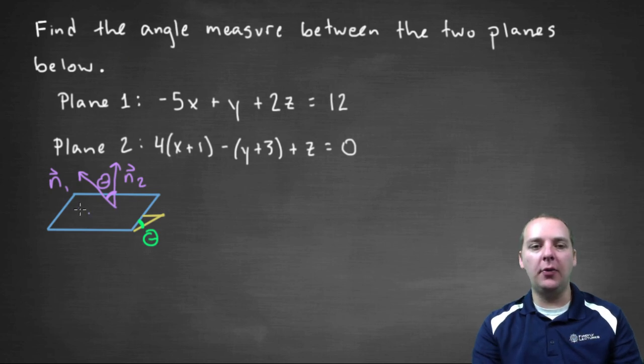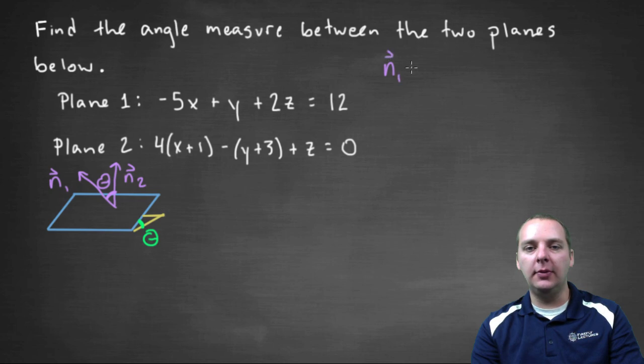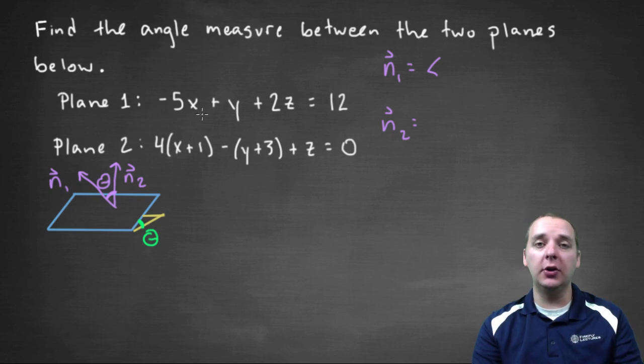So step one, let's read off what these two normal vectors are. So we'll have n one, and then we'll have vector n two. This is very quick and easy to read off what the normal vectors are. You just look at the coefficients of the x and the y and the z.